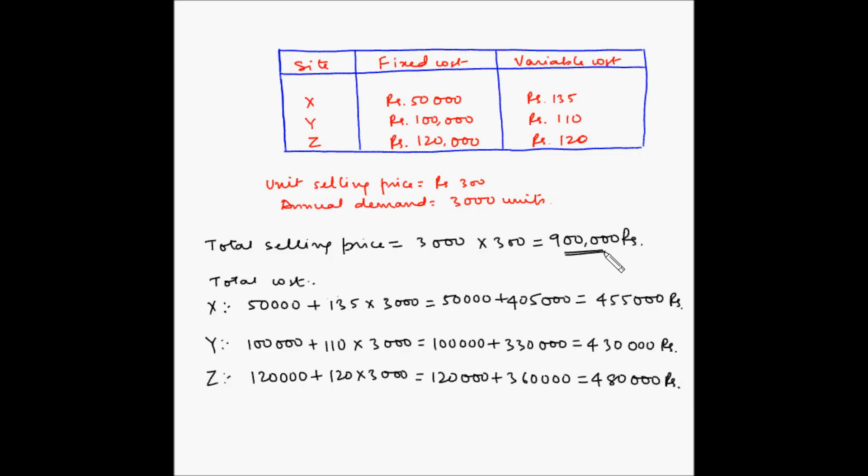Now here the total selling price is the same for all the three sites, so whichever site has the lowest cost will be able to provide the maximum profits. So here Y has the lowest cost, so Y will be able to give us the maximum profits. So the recommended site is Y.